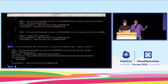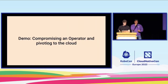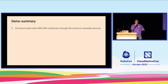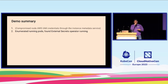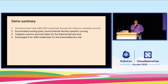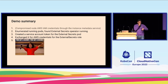To recap: we initially compromised the node through an application vulnerability and got node credentials from the instance metadata service. We enumerated pods running on the node, created a service account token for the external secrets pod that had significant permissions, changed to use those permissions to interact with AWS, and retrieved the secrets. You get the secret. It's breached.